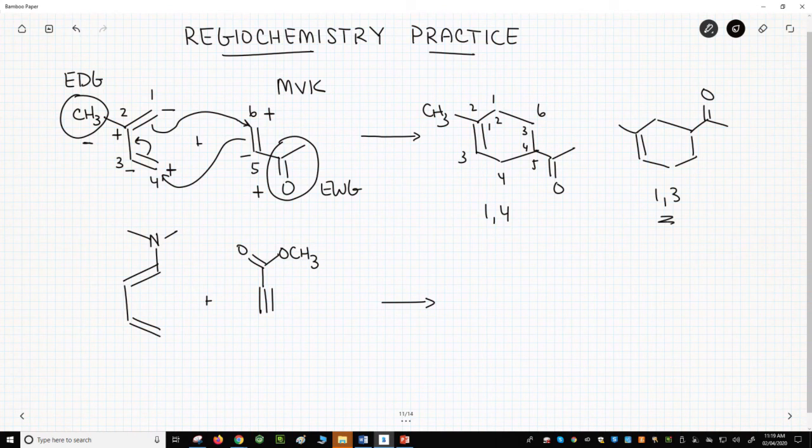The diene is 1-dimethylamino, 1-3-butadiene. The amine is an EDG. So it's a minus. Assign the imaginary charges on the diene accordingly.